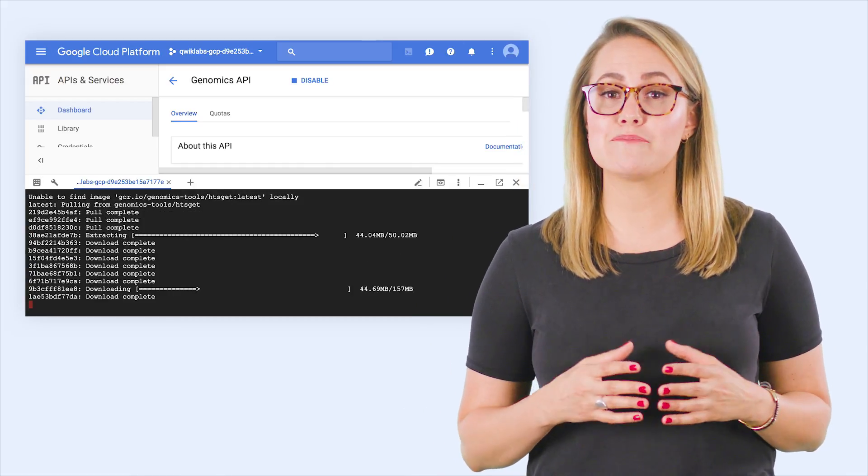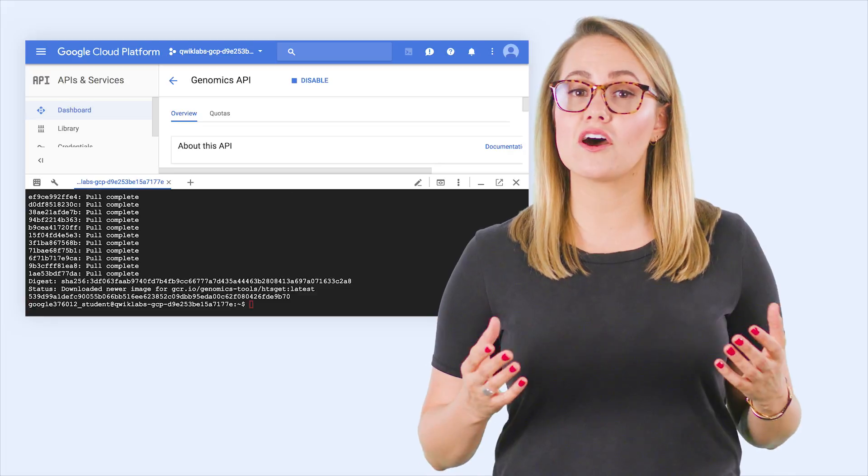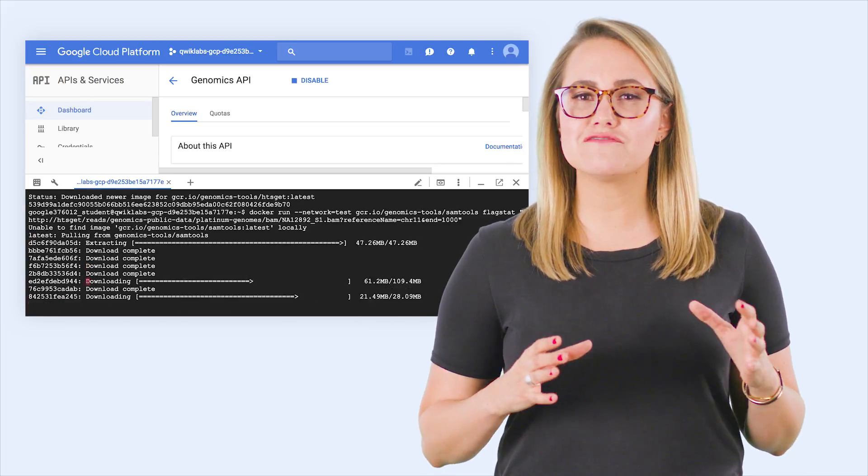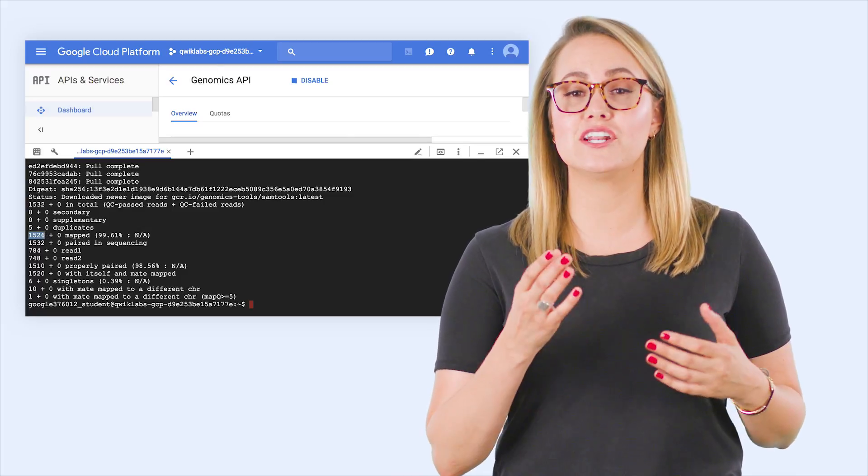We then use sequence alignment map tools to view statistics about a small range on chromosome 11 on a public genome. In just a few seconds, the SAM tools have processed over 1,500 reads that were streamed from a file in Google Cloud Storage. Highly complex searches that previously could have taken minutes are now taking as little as four seconds.